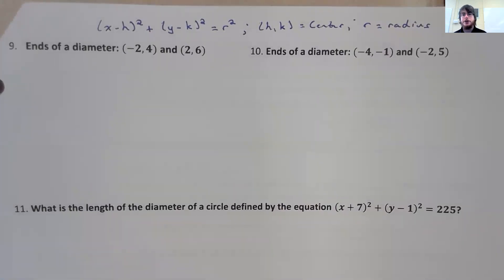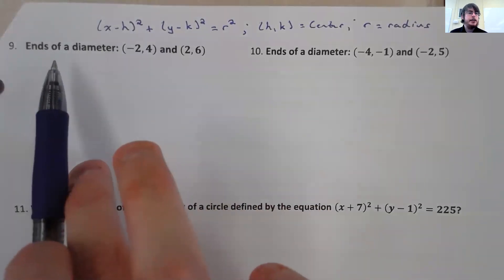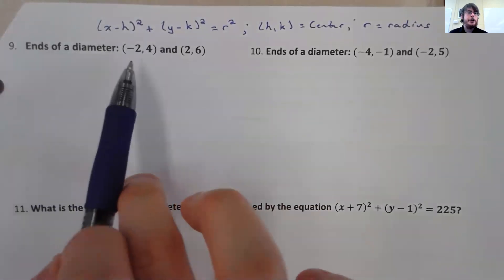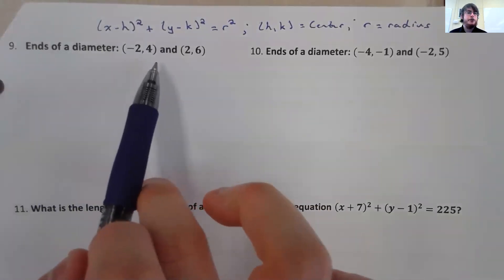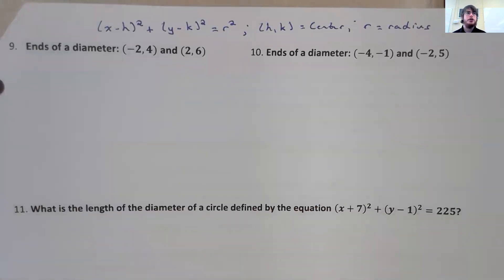So if it gives you the diameter, you need to make sure that you find the radius from the diameter. Let's look at number nine. It says the ends of a diameter are negative 2, 4 and 2, 6, and it wants us to write the standard equation of a circle.